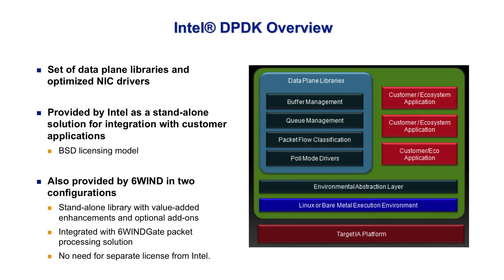The Intel Data Plane Development Kit, or Intel DPDK, is software that accelerates packet processing functions running on Intel Xeon processor platforms. The data plane libraries that are included perform functions such as buffer management, queue management, and packet flow classification. Poll mode drivers for high bandwidth packet capture are also included.